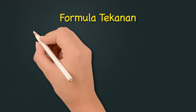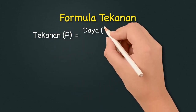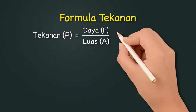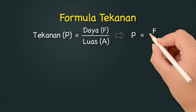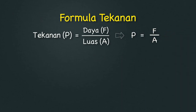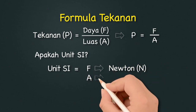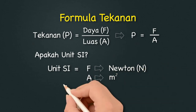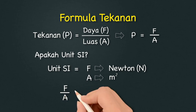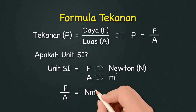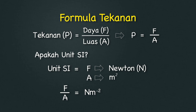Formula tekanan boleh kita tulis sebagai P = F/A. Kamu wajib tahu apakah unit SI untuk tekanan. Jika unit SI untuk daya F adalah Newton (N) dan luas A adalah meter persegi, maka bila kita bahagikan F dengan A, unitnya akan menjadi N per meter persegi. Unit untuk tekanan juga boleh ditulis sebagai Pa, iaitu singkatan kepada Paskal.